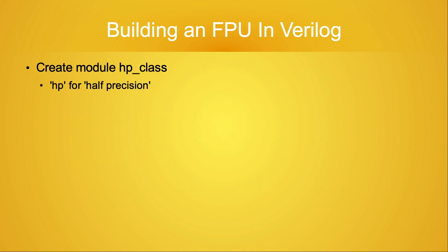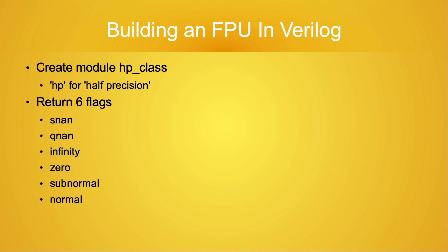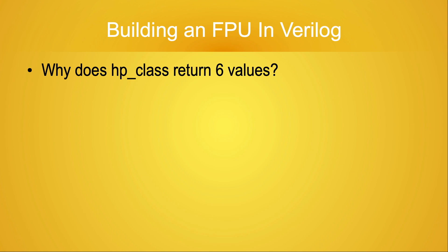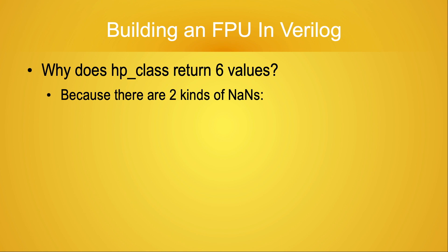I call this first module HP_class, where HP stands for half-precision. This module outputs six values: SNAN, QNAN, infinity, zero, subnormal, and normal. Each of these return values is encoded as a single bit. The module will determine which of these six categories the value falls into, set the corresponding return value to one, and the rest of the return values to zero. Some of you will have noticed I said earlier that the IEEE standard defines five categories for values, and yet the module will compute six return values. The IEEE standard actually defines two different kinds of NANs, which is why the HP_class module will return six different flags.